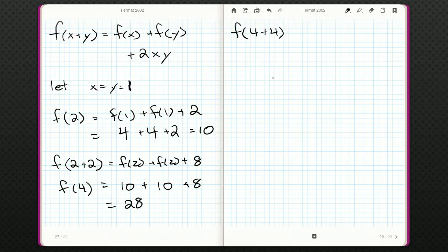But we want f of 8, so our last step is going to be f of 4 plus 4, so that's f of 4 plus f of 4 plus 2 times 4 times 4. So 4 plus 4 is 8. f of 4 is 28, plus 28, plus 2 times 4 times 4. That's going to be 2 times 16, so that's going to be 32. 32 plus 28, 32 plus 28 that's 60. And 60 plus 28, well that's going to be 68 plus 20, so that's 88.